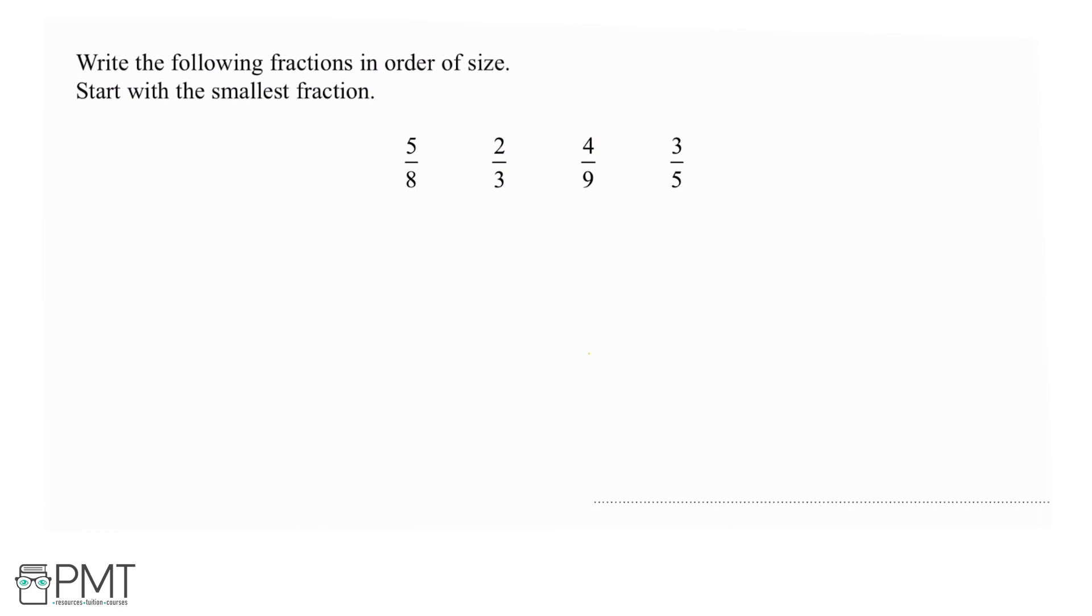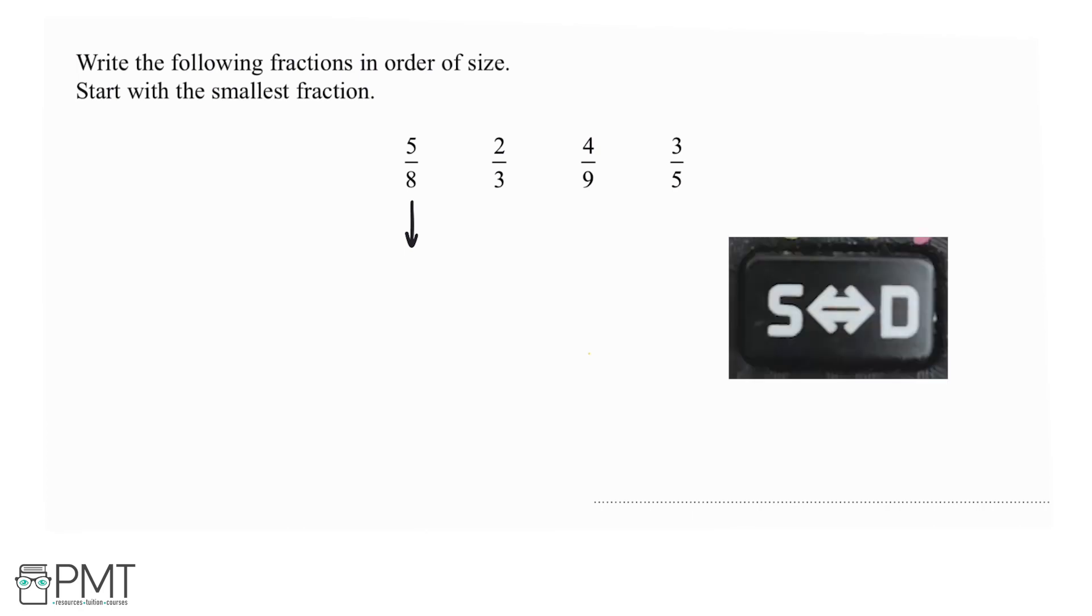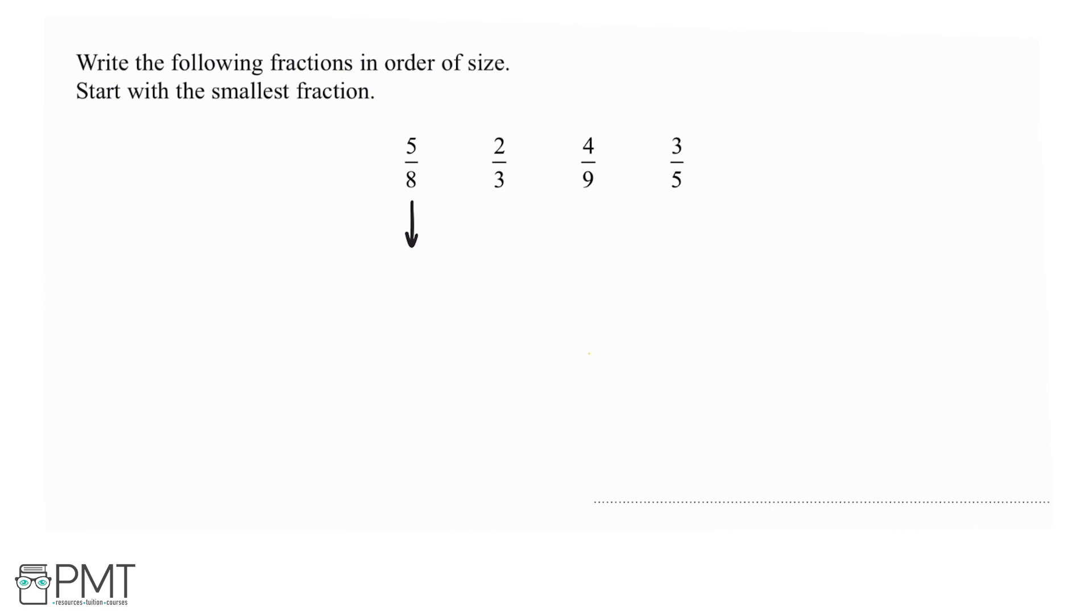Let's start by converting to decimals. Now, this is a calculator paper, so to do that we can put in the fraction 5 over 8 on our calculator and click equals, and there's a button which might look something like this in your calculator that will display the answer as a decimal. So if we click that, we'll see here that we get 0.625.